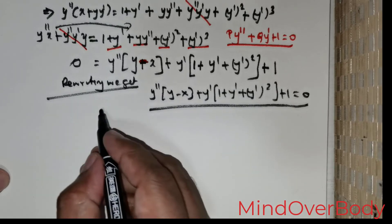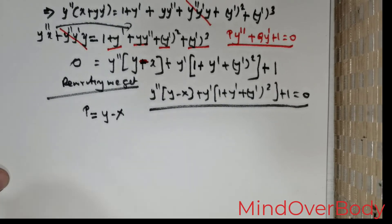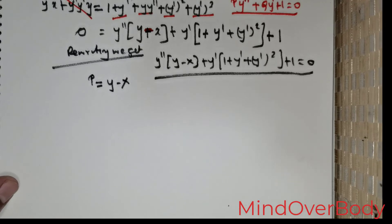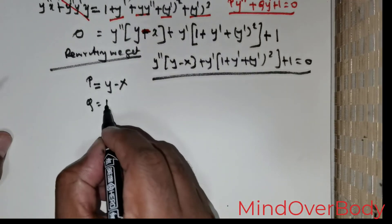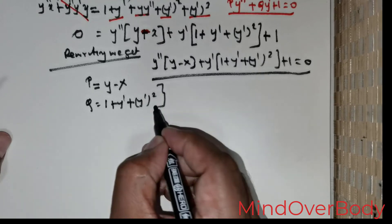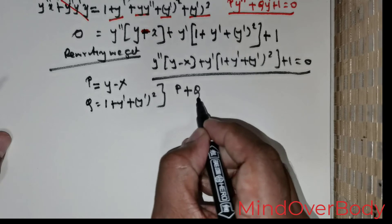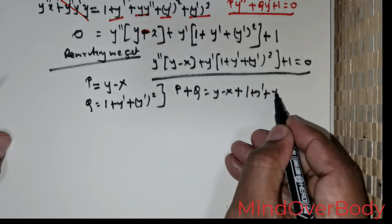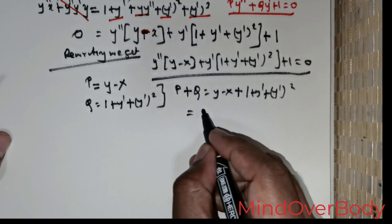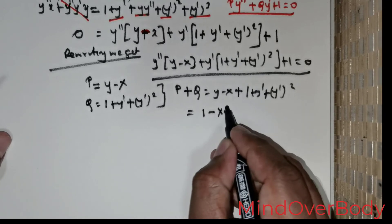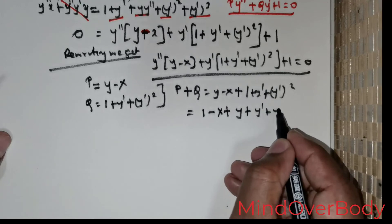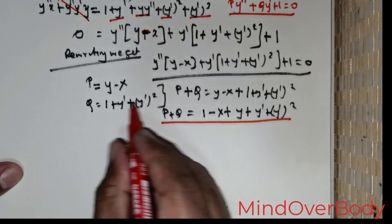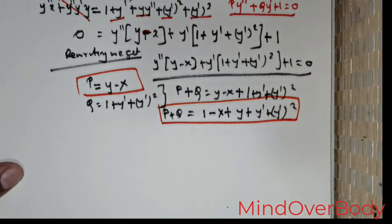Clearly the value of p is y − x. The value of q is 1 + y' + (y')². Therefore p + q = (y − x) + (1 + y' + (y')²) = 1 − x + y + y' + (y')². This is a beautiful question and we have achieved the required result.